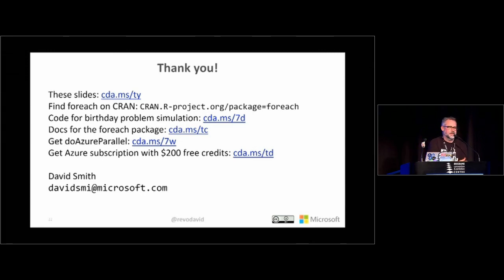Q: How does foreach handle package dependencies when you specify code in a single function? A: foreach will find objects, but if the code relies on functions from other packages it won't know about that by default. In the cluster.json file you can specify other packages to be loaded on those individual machines — packages can be from CRAN or GitHub. You can also specify your own Docker image to run on each cluster node, and make anything available in that Docker image.